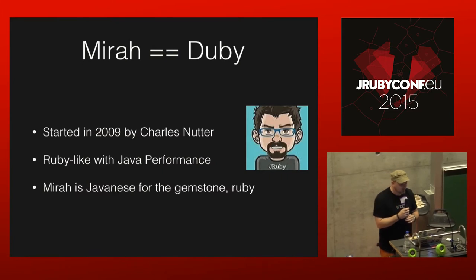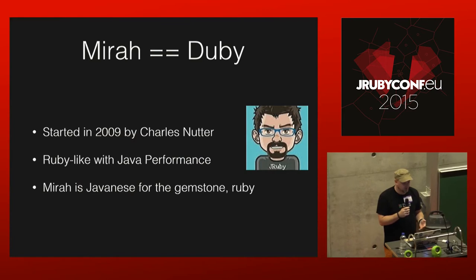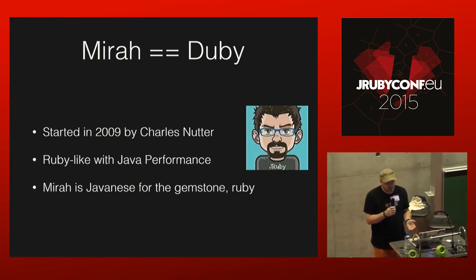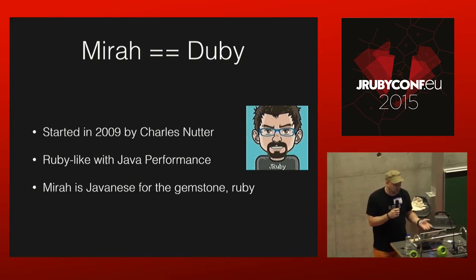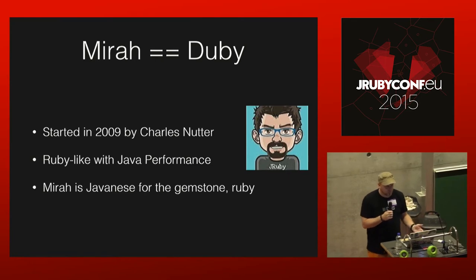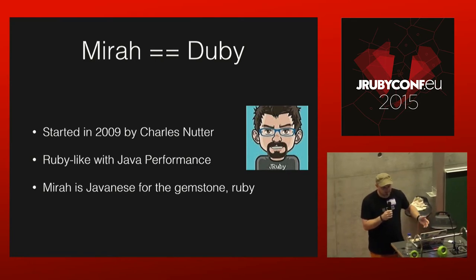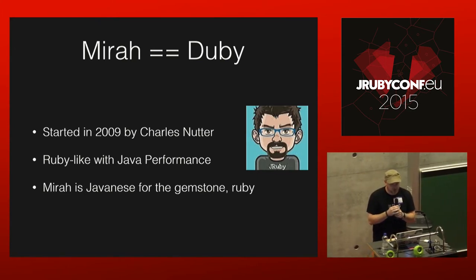So where did it come from? There was some dude — I guess he's from like Minnesota or something. He was bored and he made this thing called Doobie, which is a strange name. Around 2009, Charlie wanted to do a Ruby-like language — a subset of Ruby syntax that could compile to solid, fast idiomatic JVM bytecode. The word Mirah, which came along later, is actually a Javanese word. The people who live in Java — their word for the gemstone Ruby is Mirah. And that's how the name switched from Doobie. I think we all see what they did there.